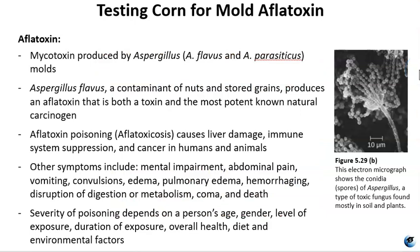Aflatoxin is a mycotoxin produced by Aspergillus mold. The aflatoxin produced by Aspergillus flavus is the most potent known natural carcinogen. Aflatoxicosis causes liver damage, immune system suppression, and cancer in humans and animals. Other symptoms of aflatoxicosis include mental impairment, abdominal pain, vomiting, convulsions, edema, pulmonary edema, hemorrhaging, disruption of digestion or metabolism, coma, and sometimes even death. The severity of aflatoxin poisoning depends on a person's age, gender, level of exposure, duration of exposure, overall health, diet, and environmental factors.